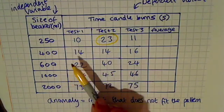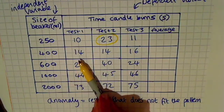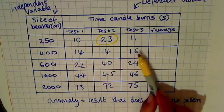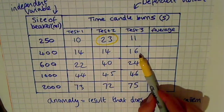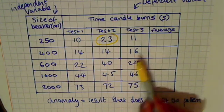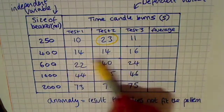In the next row, I can see 14, 14, and 16. These results are very close to each other, so I've not identified anomalies in these results.